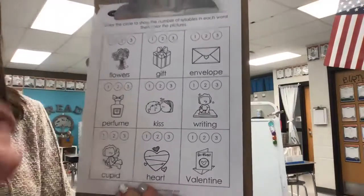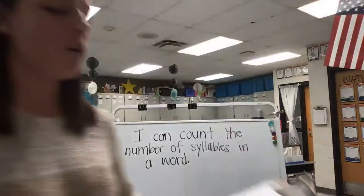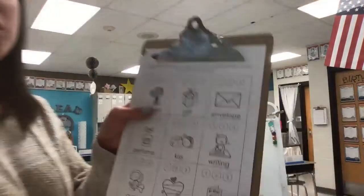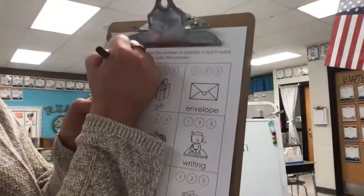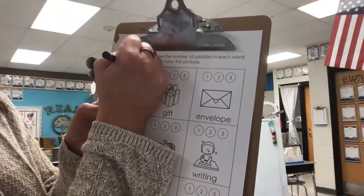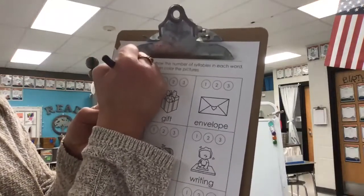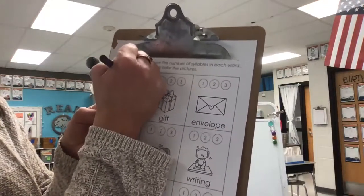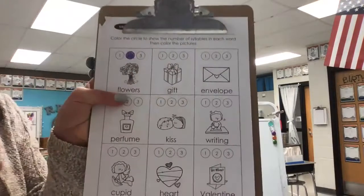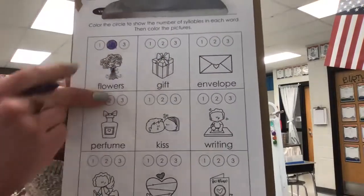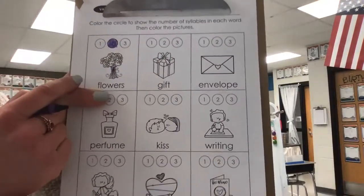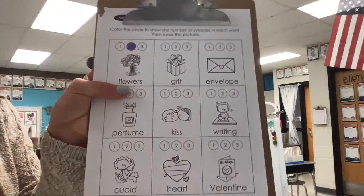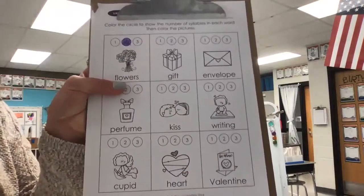All right, so let's look at the first one together. Flowers — let's clap it out. Flowers. How many syllables are there? Two. We clap two times. So we're going to color the circle with the number two inside of it. Make sure to color nice and neatly, not scribble-scrabble. If you get outside of the circle, you might accidentally color the one or two with it, and then we won't know — do they think there's one, two, or three syllables in that word?